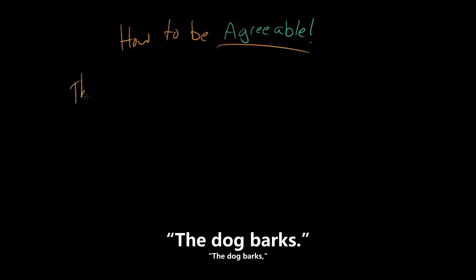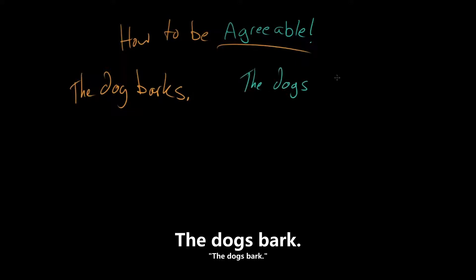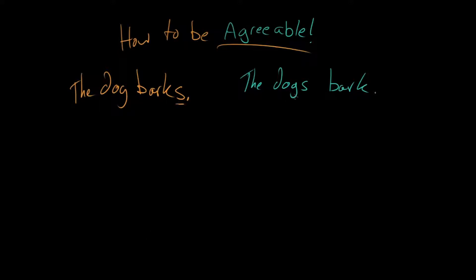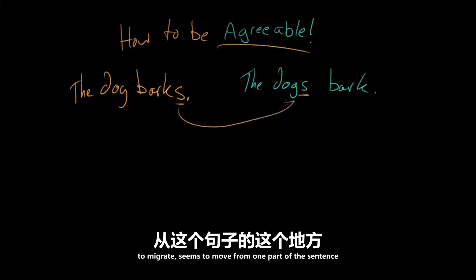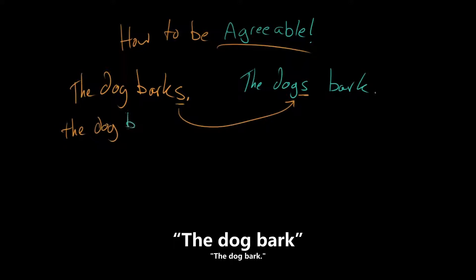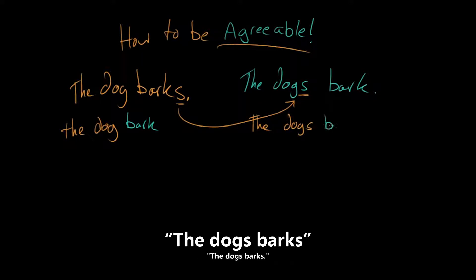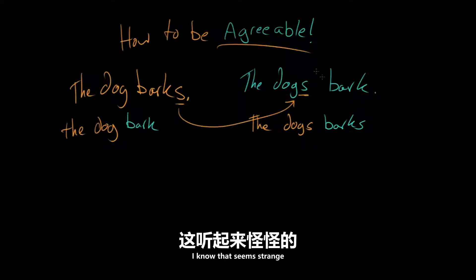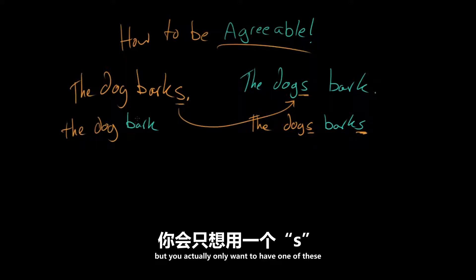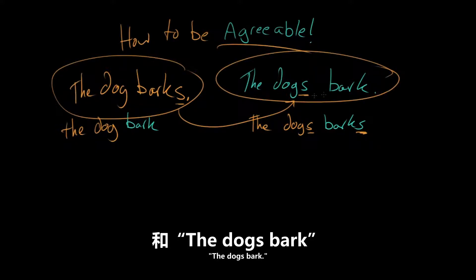Let me give you an example. The dog barks, as opposed to the dogs bark. Do you see the difference? It's funny because the S seems to migrate, seems to move from one part of the sentence to the other. So what you wouldn't say is the dog bark — that doesn't work. And you wouldn't say the dogs barks. So: the dog barks. The dogs bark.